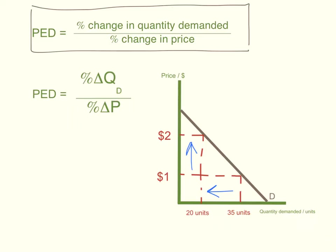Now let's see how it's calculated. Assume, for example, we're looking at a product. When the price was $1, consumers bought 35 units. When the price rose to $2, the quantity demanded decreased from 35 to 20 units.